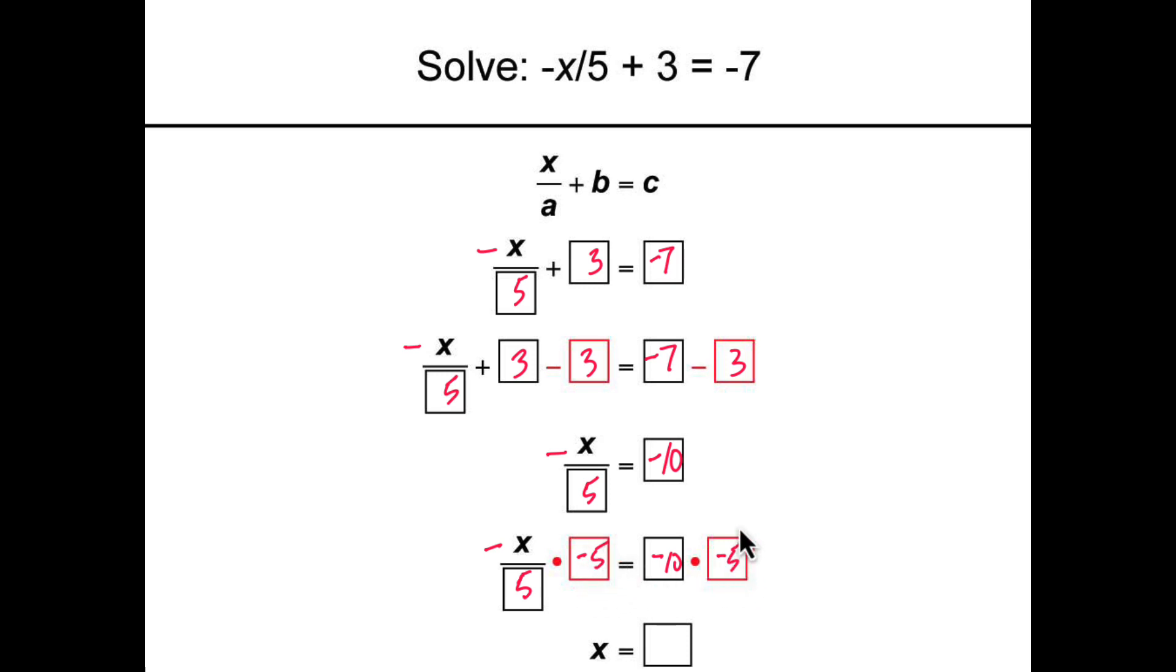As you can see, we're multiplying both sides of the equation by negative 5. Simplifying, we get x is equal to 50.